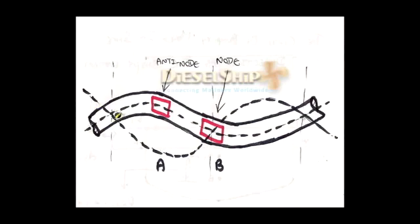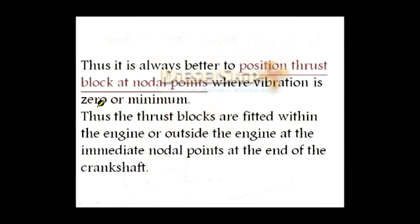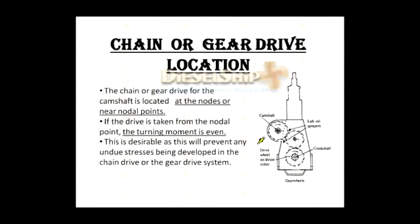The thrust block can be placed at any of the nodal points along the shafting system, where vibration is zero or minimum. If the thrust block is fitted at an anti-node, the vibration is maximum and it will be subjected to huge stresses. Similarly, chain or gear drives — the Sulzer engines have a gear drive and the MAN B&W have a chain drive — should also be located at nodes or near-nodal points. If the drive is taken from the nodal point, the turning moment is even and there are no undue stresses on the drive gears.